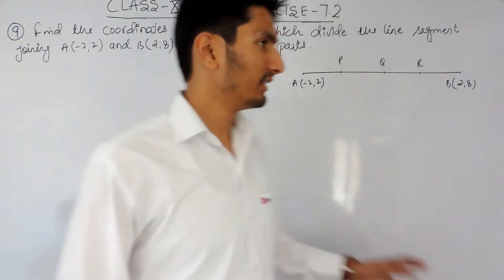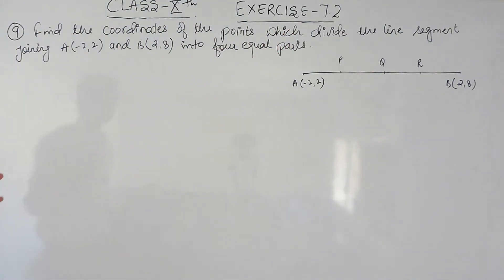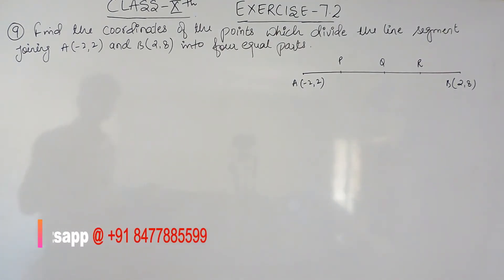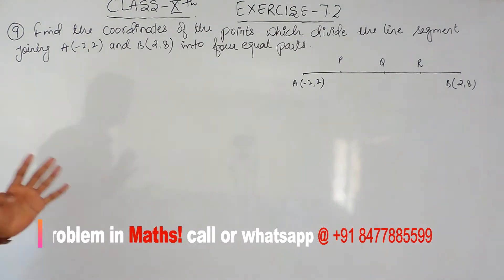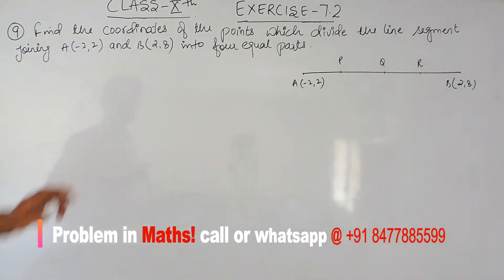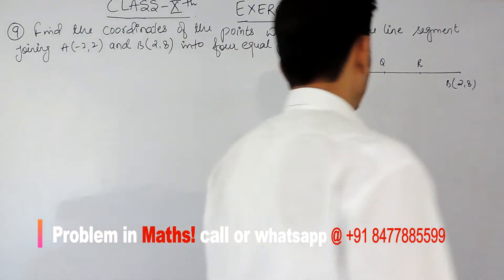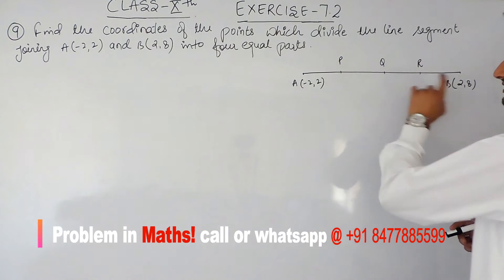Hello everyone. In this video we are going to solve question number 9, exercise 7.2. The question says: find the coordinates of the point which divide the line segment joining A and B into four equal parts. The coordinates of A and B are given to us, and we have to find the coordinates of these three points which divide this line segment into four equal parts.